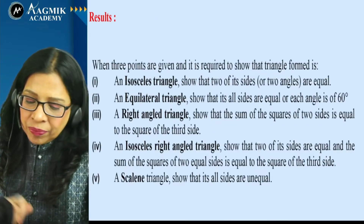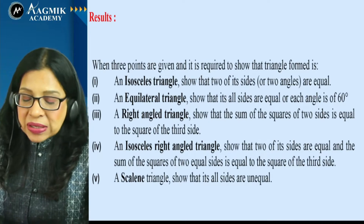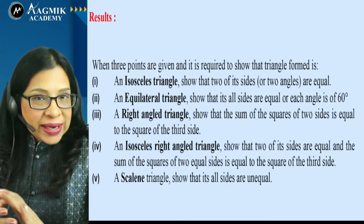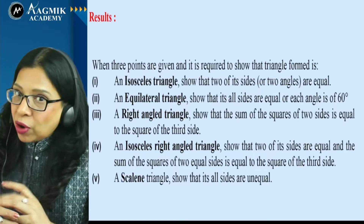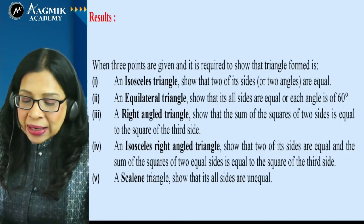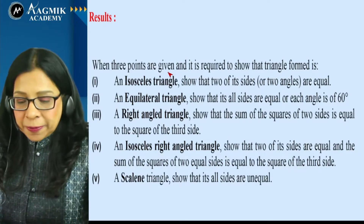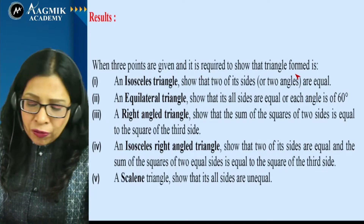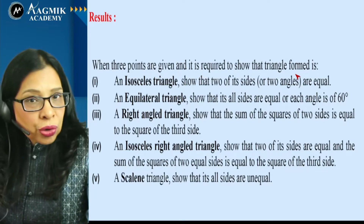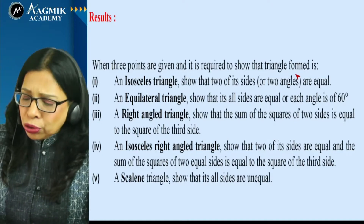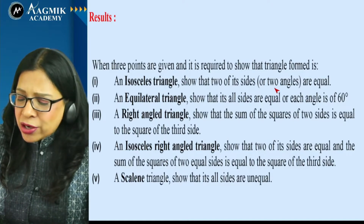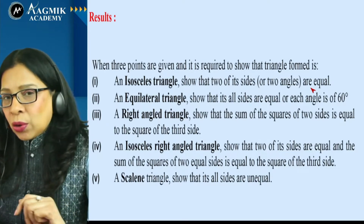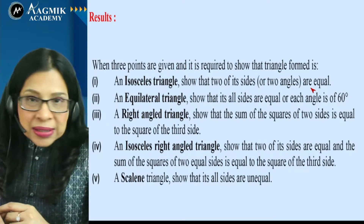Now let us talk about some results based on the distance formula — questions in which the distance formula is used. For example, if three points are given and you are asked to show the triangle formed is isosceles, you need to show two sides are equal, that is, the distances between those two sides are equal.